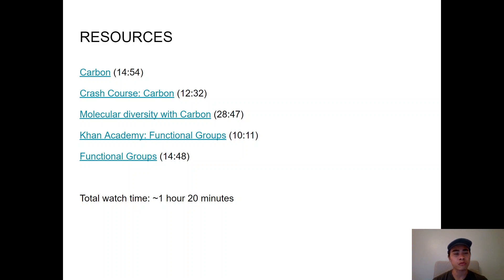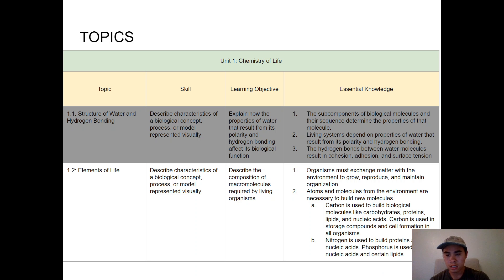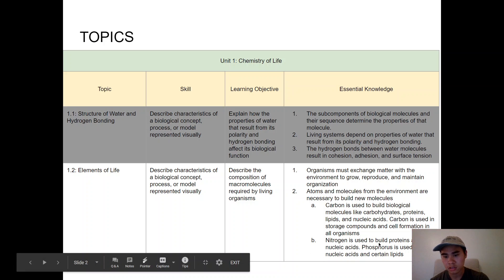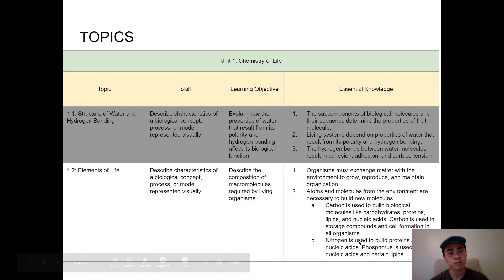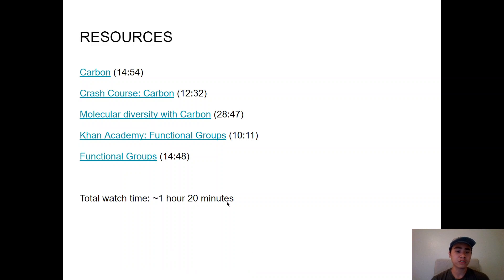That wraps up the basics of carbon, nitrogen, and phosphorus. Phosphorus and nitrogen were covered briefly, so research more on those topics. Go back to the first slide and remember: nitrogen is used to build proteins and nucleic acids, and phosphorus is used to build nucleic acids and certain lipids. There are about an hour and 20 minutes of extra supplemental resources linked below on carbon, functional groups, nitrogen, and phosphorus.